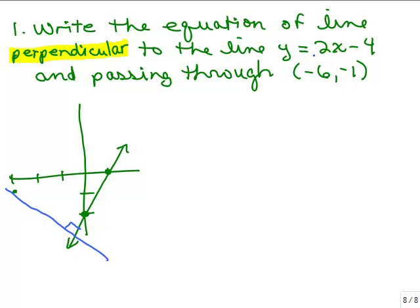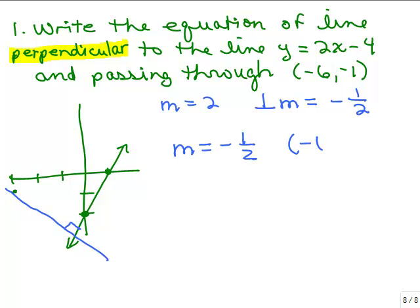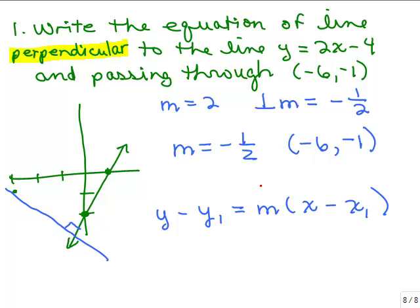If the line is perpendicular to y equals 2x minus 4, since that slope is 2, the perpendicular slope will be the negative reciprocal of 2, which is negative 1 half. Now I need to write the equation of a line with slope negative 1 half going through negative 6, negative 1. Using the point-slope formula again — y minus y1 equals m times x minus x1 — we plug in negative 1 half for slope, negative 6 for x1, and negative 1 for y1.